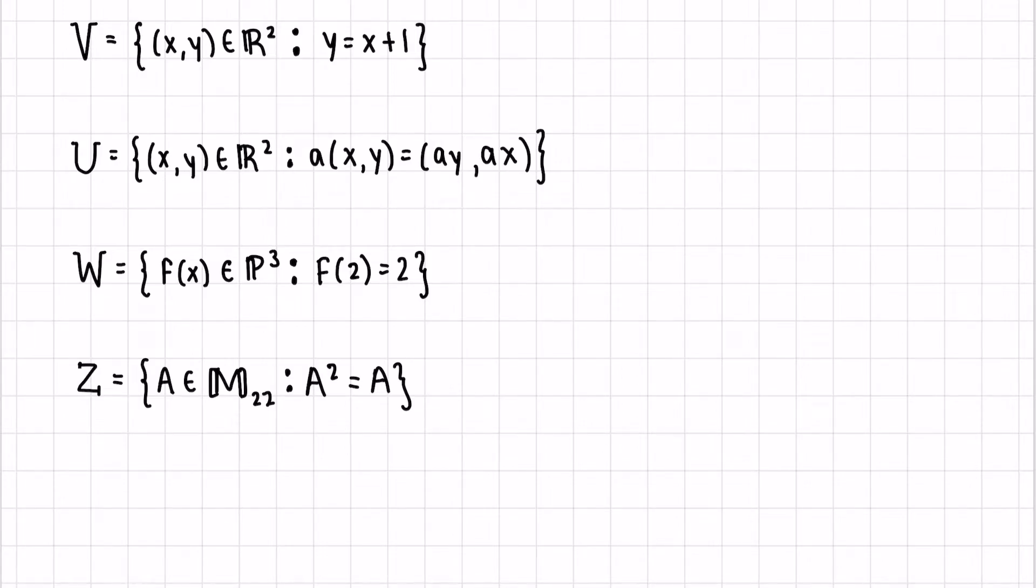For this first set V, I noticed that there is a 1, y equals x plus 1. I know that the 0 vector in R^2 is (0, 0), which has the property if we add (0, 0) plus (x, y), we get back (x, y).